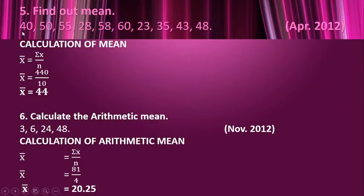In a similar situation where we have 10 values, n is 10. The total of those values is 440. σx / n = 440 / 10, which is 44.